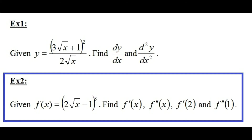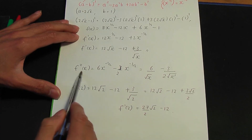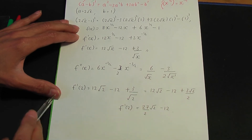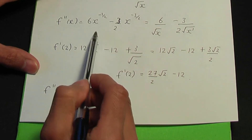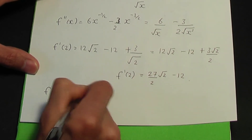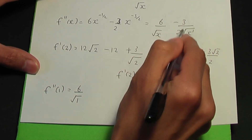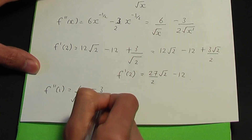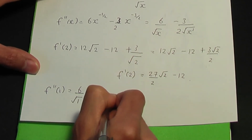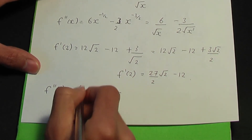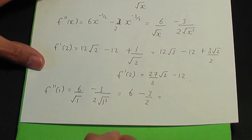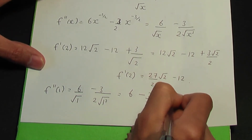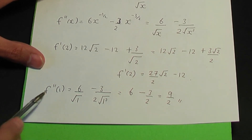For f double prime(1), we use f''(x) = 6/√x - 3/(2√(x³)) and replace all x's with 1. This gives 6/√1 - 3/(2 × (√1)³) = 6/1 - 3/2 = 6 - 3/2 = 9/2. So f''(1) = 9/2.